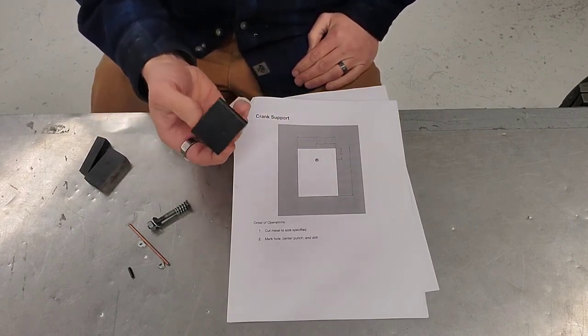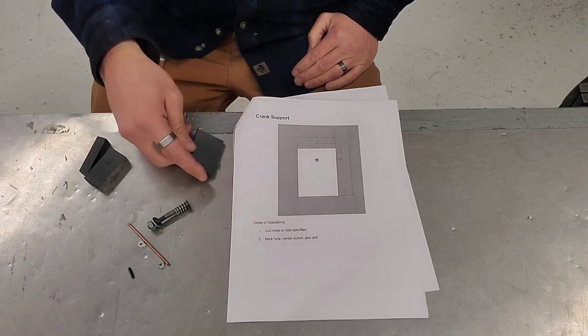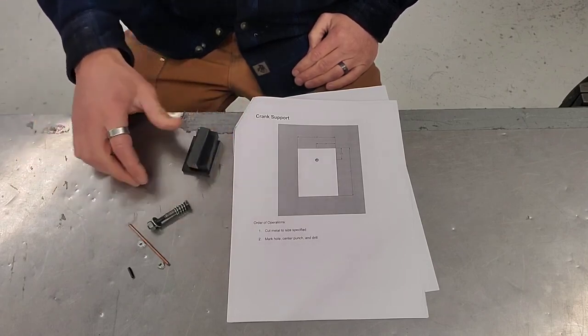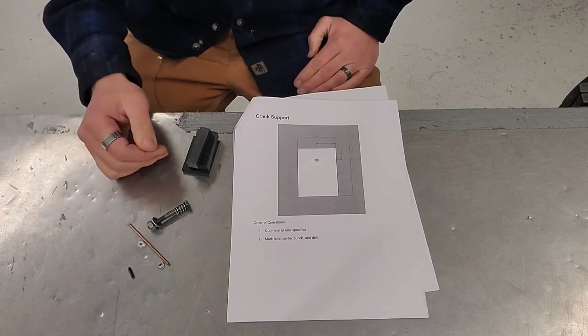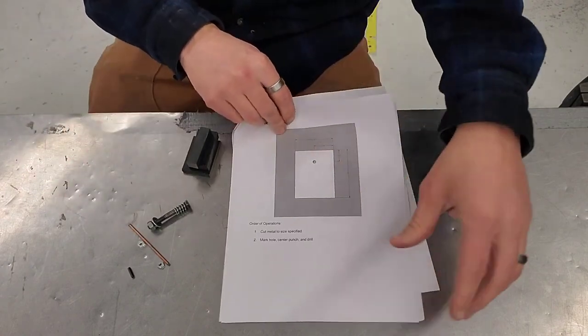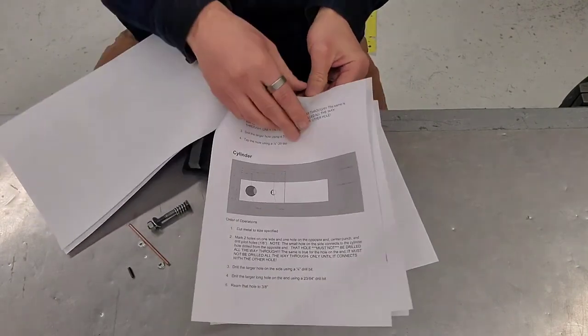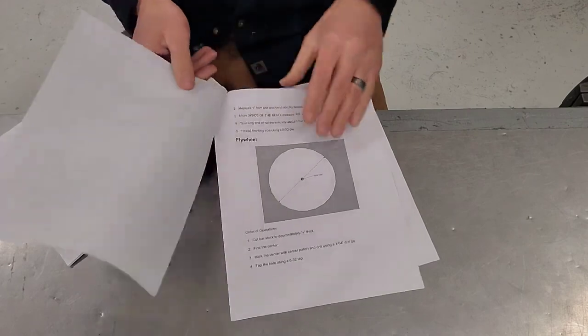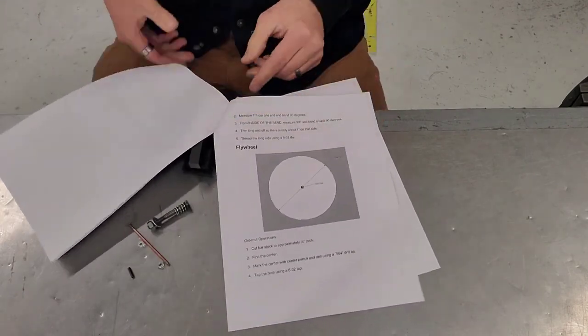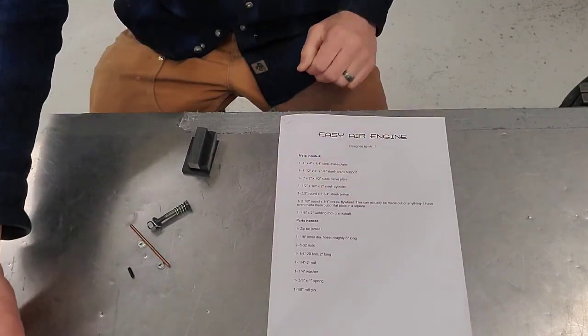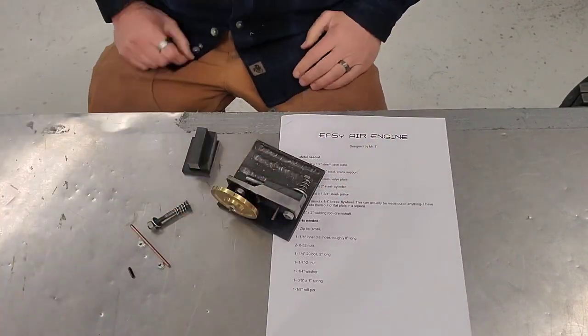So this is our first step. We're going to make the crank support. Then we move on to the valve plate, cylinder, piston, flywheel. As you go through this, it gives you the basic rundown of how each of these parts are made. And the following videos will give you much more detailed demonstration of how to make every part. Can't wait to see your engines running.